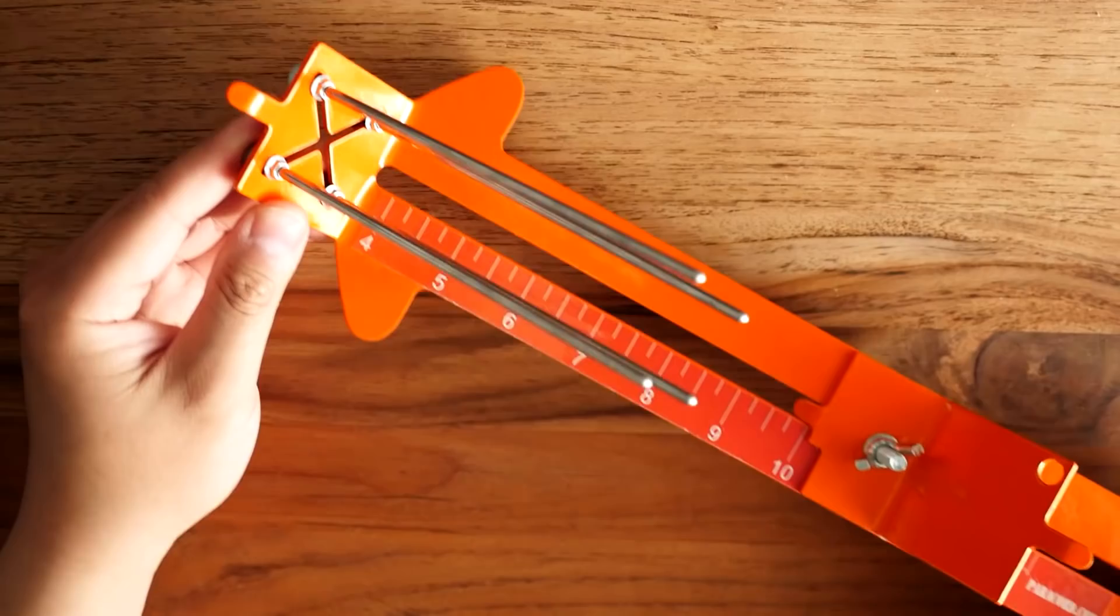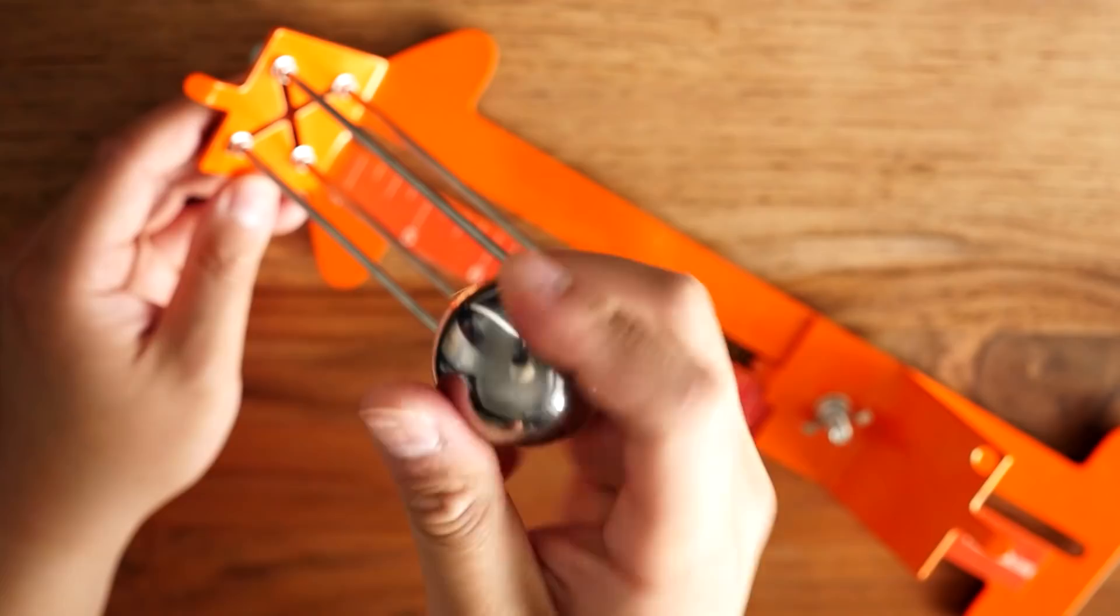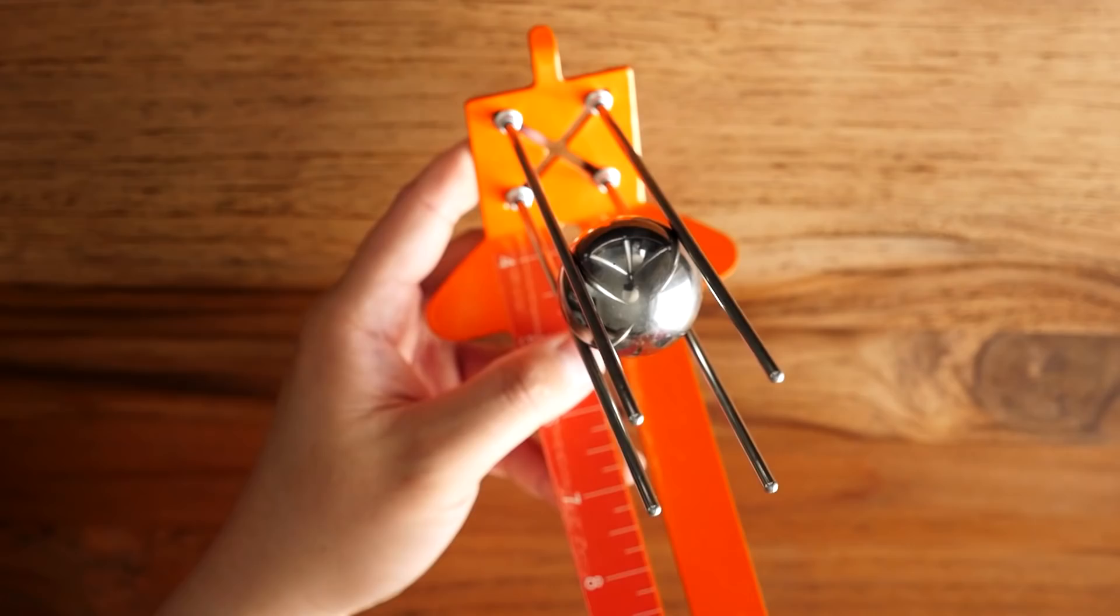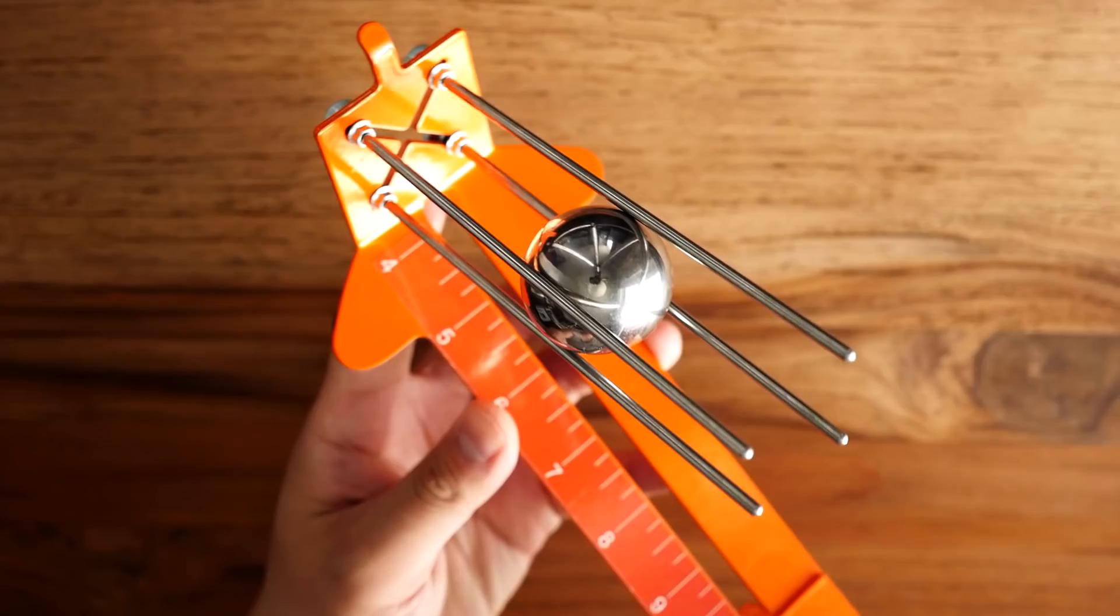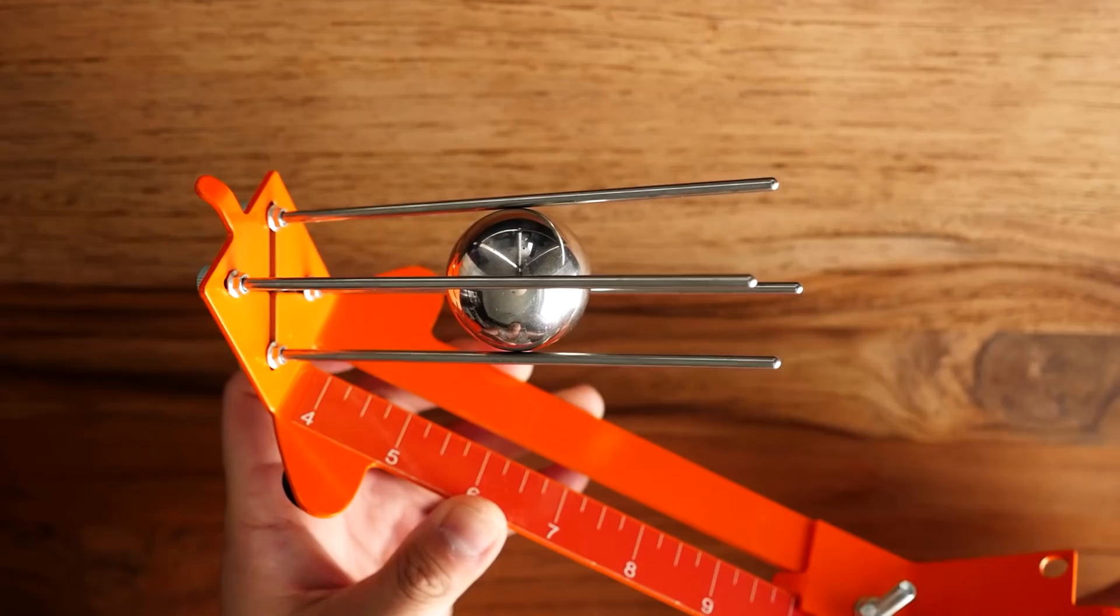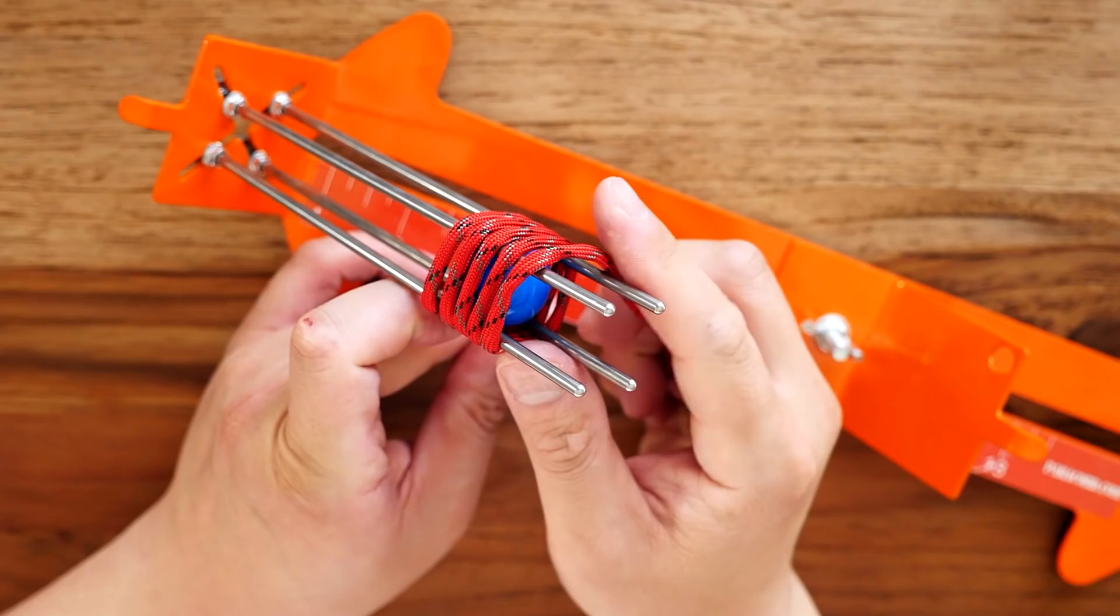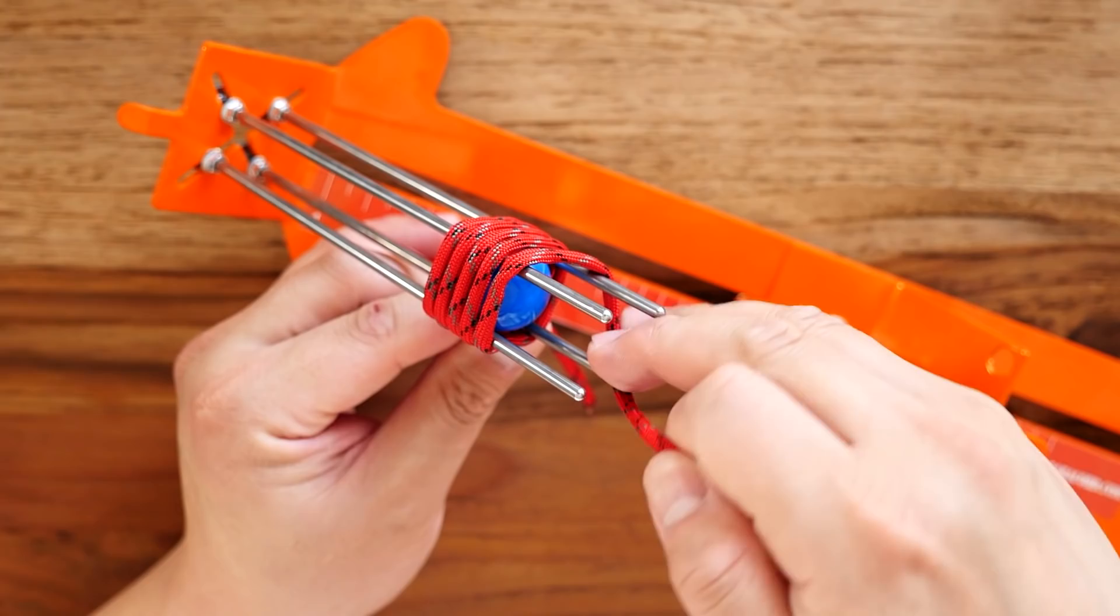The rods are a bit on the thinner side because this is a much smaller jig - it's not a dedicated monkey's fist jig. But I did find that it accommodates even heavier-sized ball bearings just fine. The rods weren't too weak to hold up a larger-sized metal ball bearing. Of course, because of its smaller size, it won't accommodate much bigger cores like an eight ball - that's definitely too big. But for more average to smaller ones, it'll work just fine.